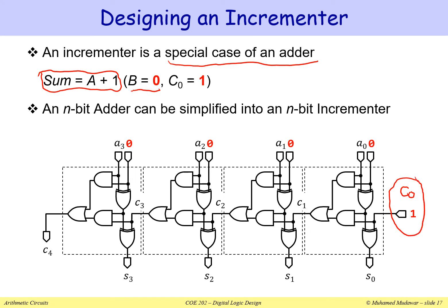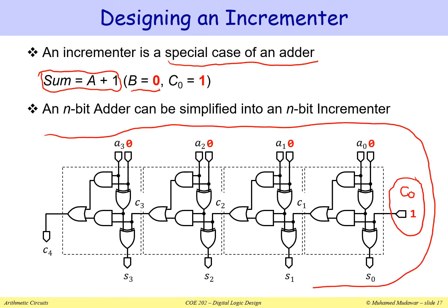What we have is a circuit — an adder — that can add any two numbers A and B. But I fixed input B to zero, as you can see from the zero inputs for B. And I made C0 equal to one so that we increment A by one. Looking at this circuit, some inputs are zeros and one input — C0 — is equal to one.